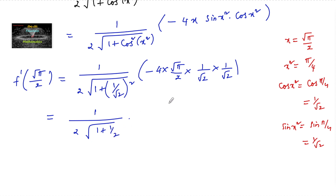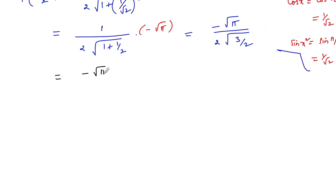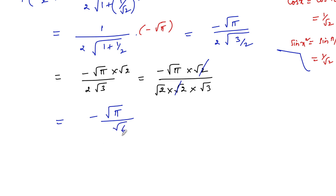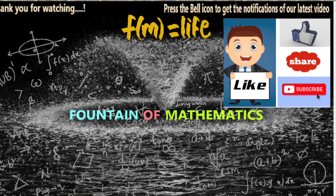Simplifying: √(3/2) in the denominator, and canceling factors of √2·√2 = 2, we get −√π·√2 over the denominator. Writing 2 as √2·√2 and √3 gives √6, we can cancel √2 and √2, leaving −√π over √6. Therefore f'(√(π/2)) = −√(π/6). Please like, share, subscribe and support us. Thank you.